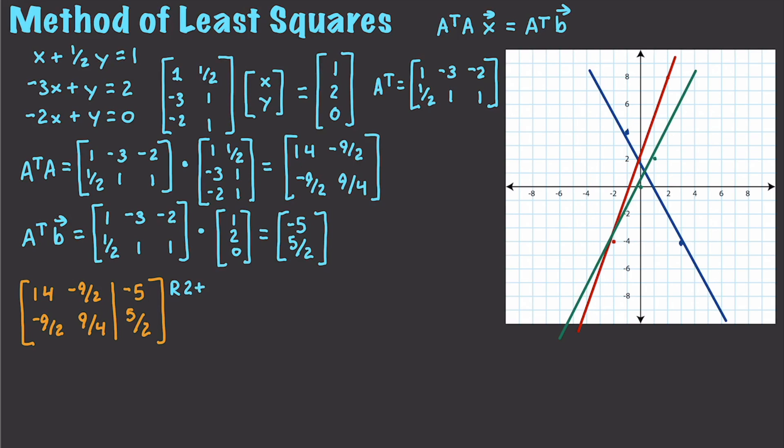Well, we say R2 plus 9 over 28 times R1 and put that result into R2. If I do so, this will end up being 14, negative 9 over 2, negative 5 and 0, 45 over 56 and 25 over 28. Now what? Well,